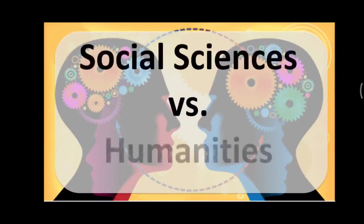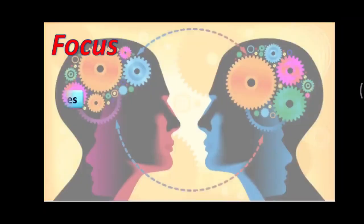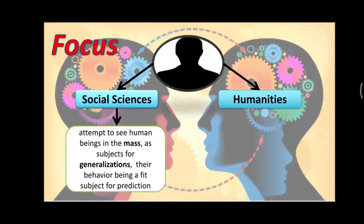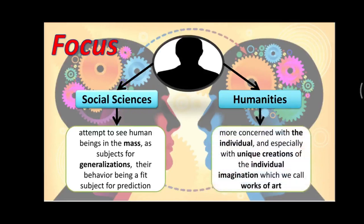Lastly, let's differentiate social sciences versus humanities. In the human strand they are combined, but there is a distinction between the two. In social sciences, it attempts to see human beings in the mass — meaning a collection of persons sharing some cultures and traditions of the same society or community — as subjects for generalizations, their behavior being a fit subject for prediction. While in humanities, it is more concerned on the individual, and especially with unique creations of the individual imagination, which we call works of art.